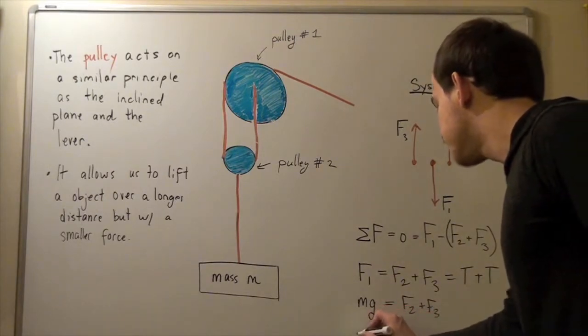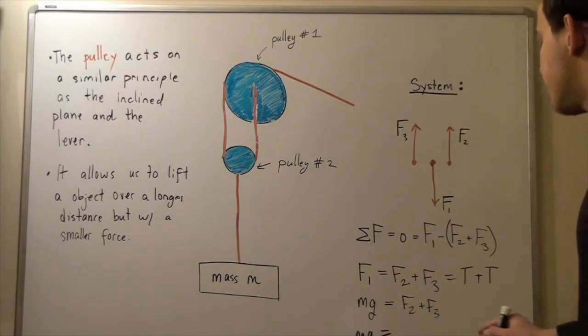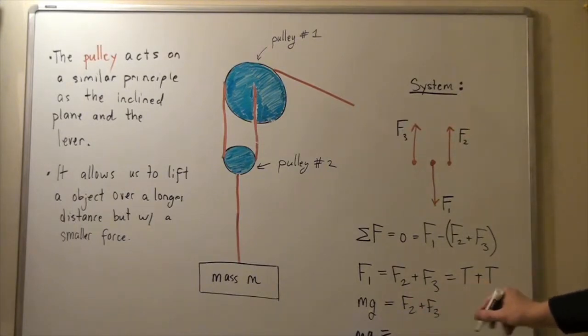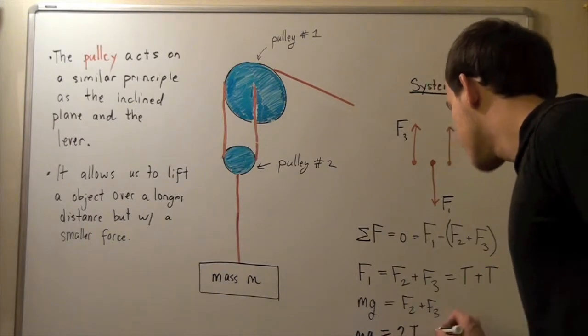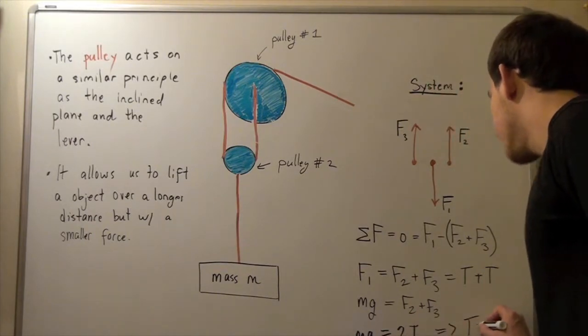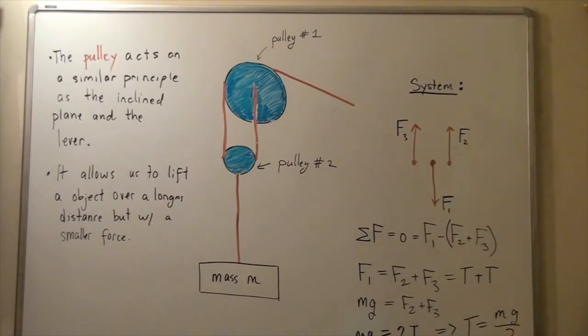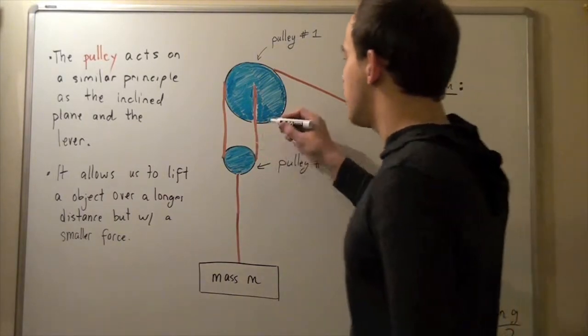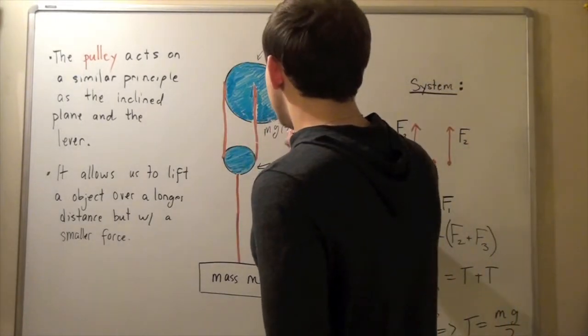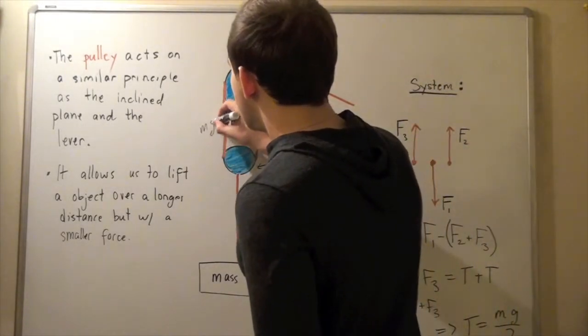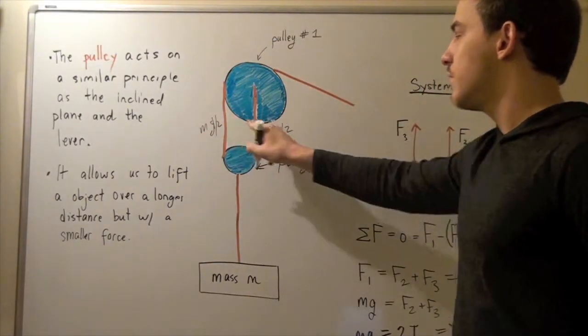So, Mg is equal to F2 plus F3, which is simply T plus T, which is simply 2T. So that means T, so that means T is simply Mg divided by 2. So we find that the force in each of these ropes, in each of these sections, is Mg divided by 2 and Mg divided by 2. So, this is my force in each of these ropes.